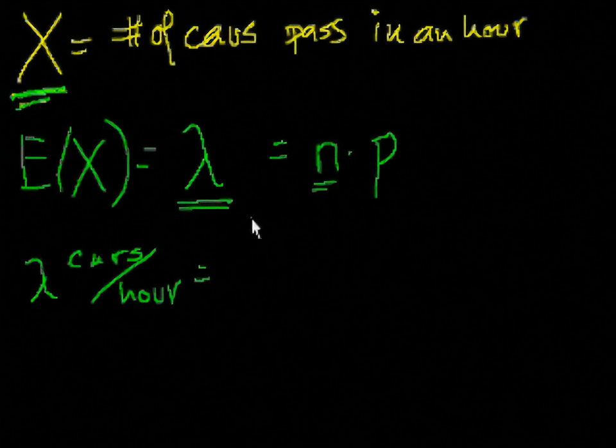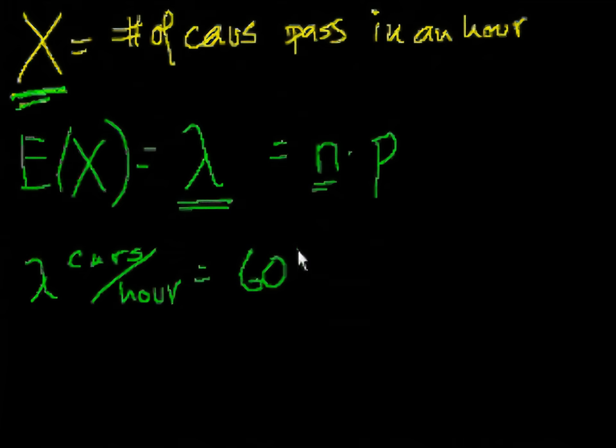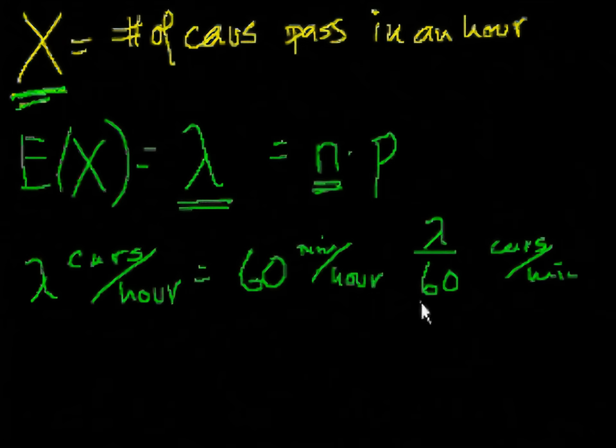So maybe we could say, lambda cars per hour is equal to, let's make each experiment or each toss of the coin equal to whether a car passes in a given minute. So there's 60 minutes per hour. And then there would be 60 trials. And then the probability that we have success in each of those trials, if we model this as a binomial distribution, would be lambda over 60 cars per minute. And this would be a probability. This would be n and this would be the probability, if we said that this is a binomial distribution.